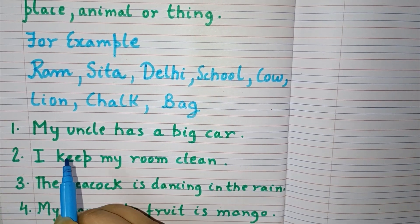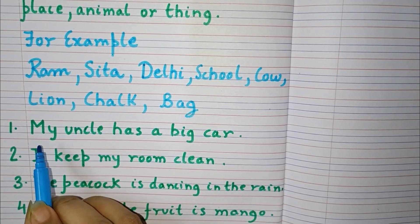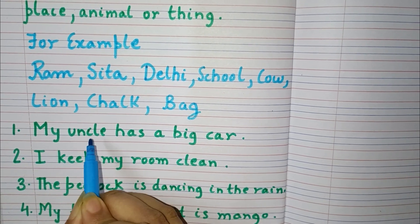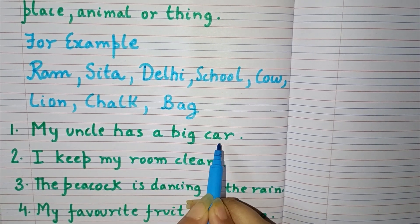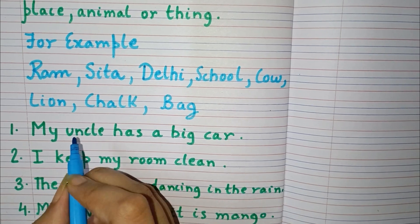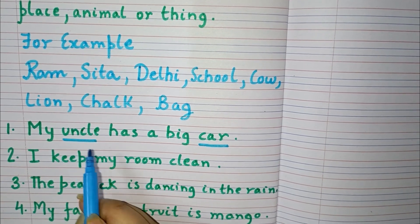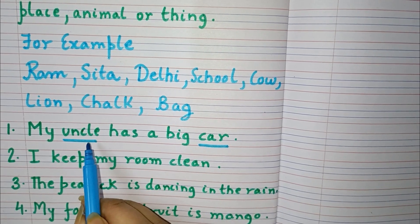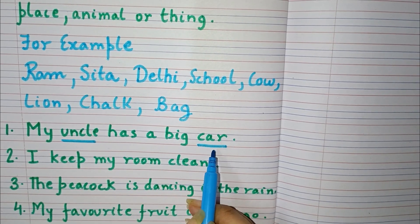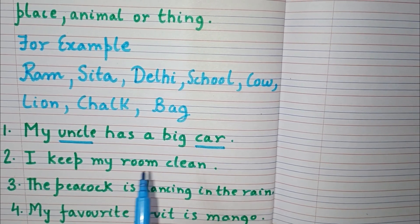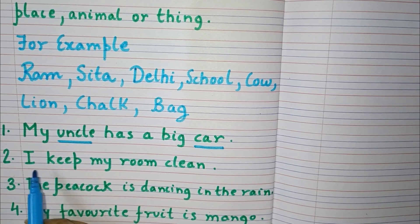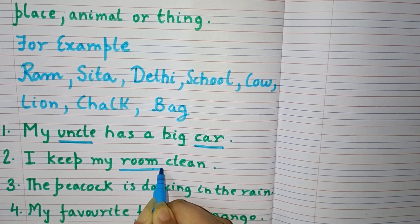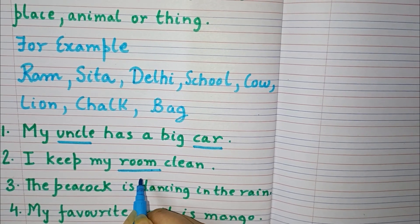Now we can see here a few more examples given in sentences. Number one: my uncle has a big car. In this, uncle and car both are nouns — uncle is a person and car is a thing. Next: I keep my room clean. In this, room is a noun because it is a place.